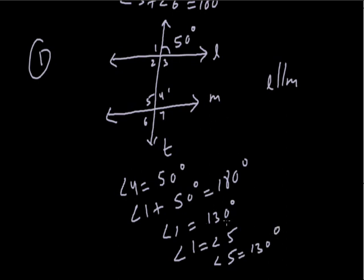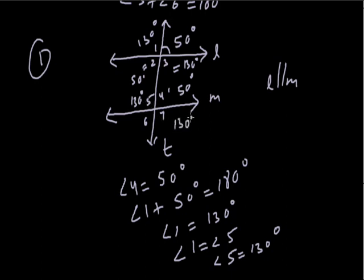Angle 1 = 130° and angle 3 = 130° because they are vertically opposite angles. Angle 2 = 50° because of vertically opposite angles. Angle 5 = 130°, so angle 7 = 130° as vertically opposite angles. Since angle 4 = 50°, angle 6 = 50° as vertically opposite angles. So when one angle is given, we can find all remaining angles.